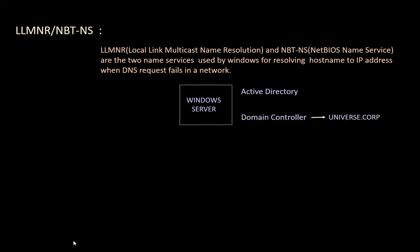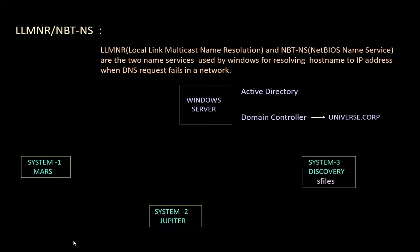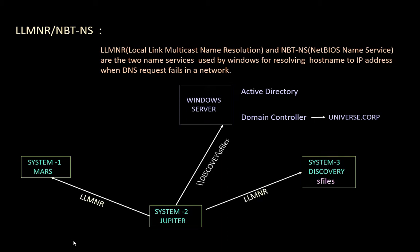Under this domain, we have multiple systems: System 1 with the hostname Mars, System 2 with the hostname Jupiter, and System 3 with the hostname Discovery. System 3 also has a shared folder called 'files'. Now let's say System 2 wants to access this 'files' share — it will send a DNS request to the Windows Server. If the user mistypes the hostname, DNS will not respond. In that case, System 2 sends a broadcast request to all systems in the domain. This broadcast request is called LLMNR in newer systems and NetBIOS Name Service in older systems.